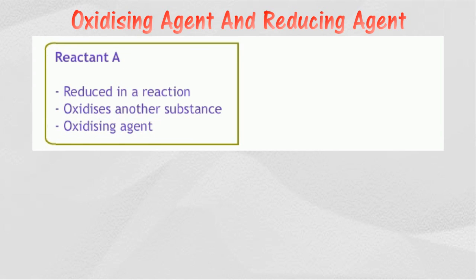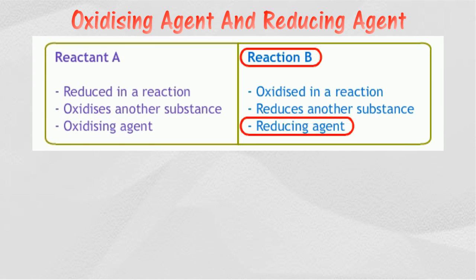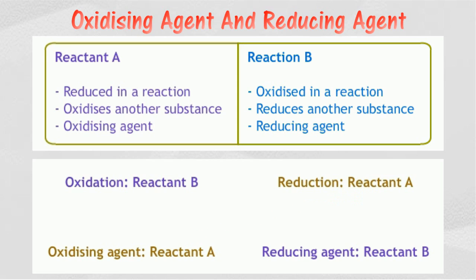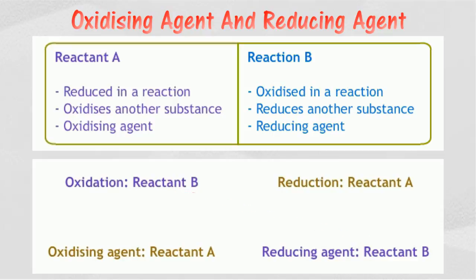A reducing agent is a substance that reduces another substance, or is oxidized in a reaction. We can determine the oxidizing agent and reducing agent based on the following guidelines: if reactant A undergoes reduction, then reactant A is the oxidizing agent; if reactant B undergoes oxidation, then reactant B is the reducing agent.